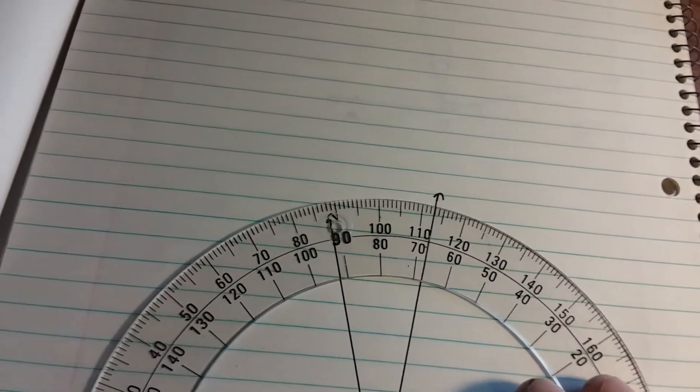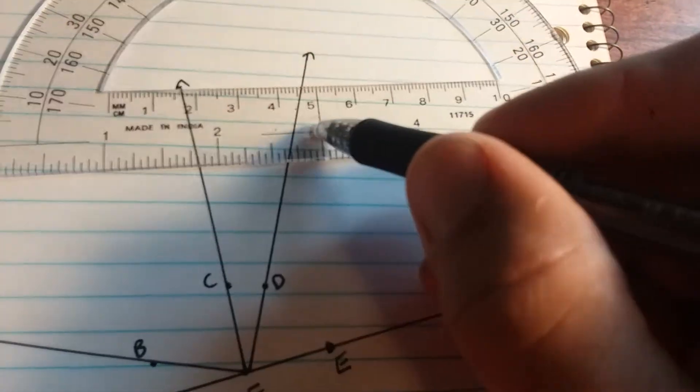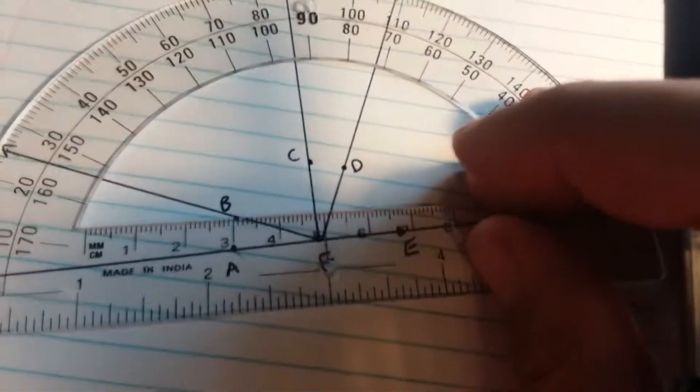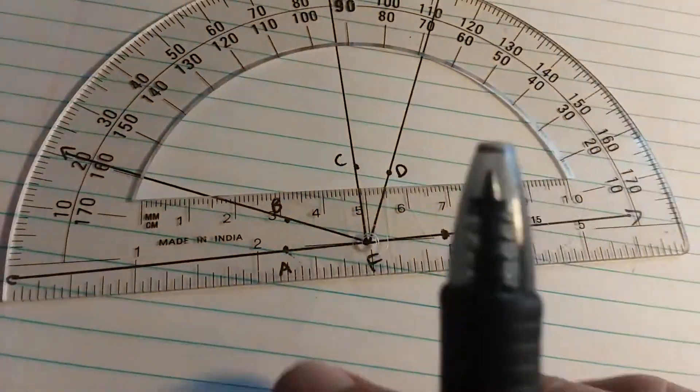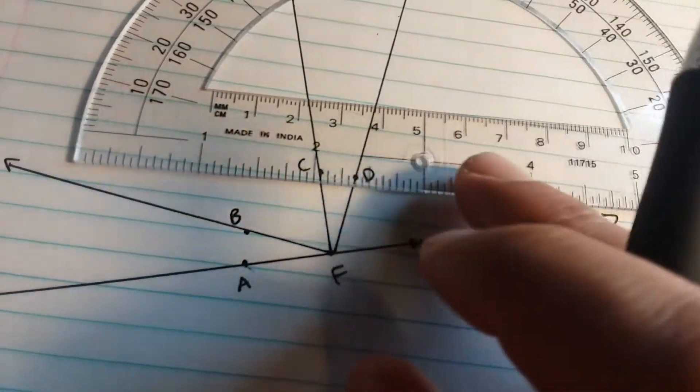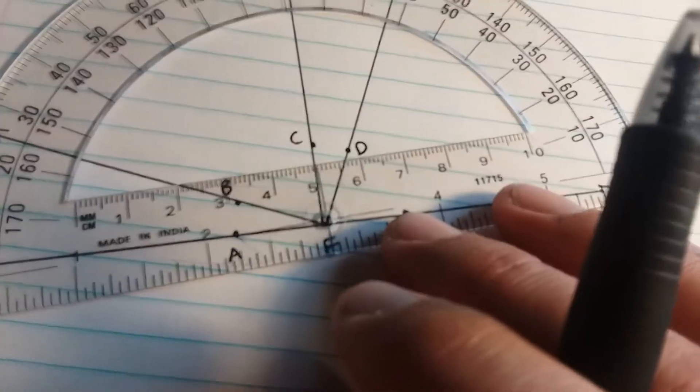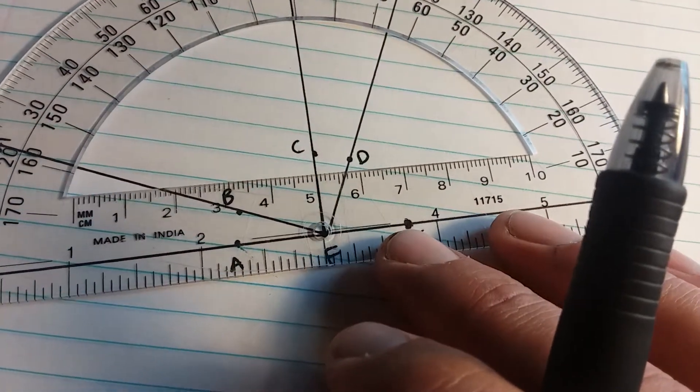Okay, so our first one is measure of angle AFB. So of course, this part I'm doing for you. I'm going to put the center of our protractor on our vertex F. That has to go right on there. And then that little line right here, that crosshair, has to go on that straight line. So that's going to go right there.